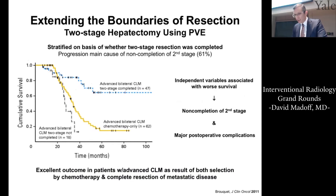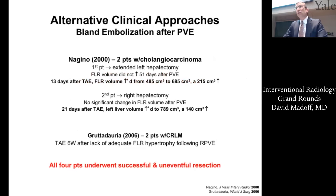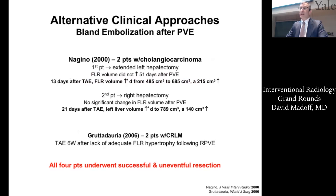One major concern regarding PVE is that about 35% of patients ultimately don't get resected — due to either insufficient FLR hypertrophy or tumor progression in the four- to six-week interval between PVE and resection. Alternate approaches have been applied. One approach, from early 2000s case reports, is arterial embolization after PVE. It's important to understand that the portal vein thrombosis from PVE is not the same as performing chemo-embolization or Y90 in patients with tumor thrombus — patients can get very sick after the combined approach. In these selective cases, all patients underwent subsequent hypertrophy and uneventful resection.